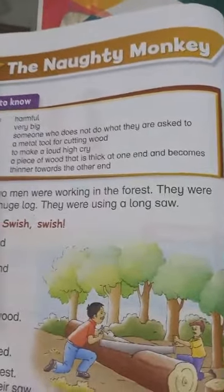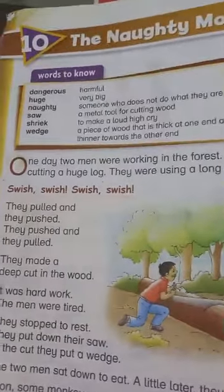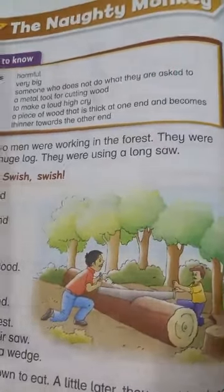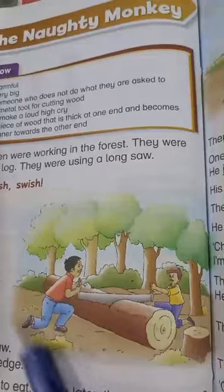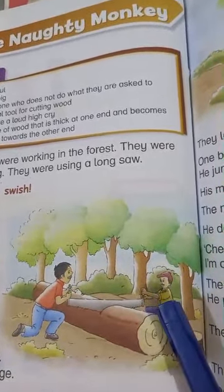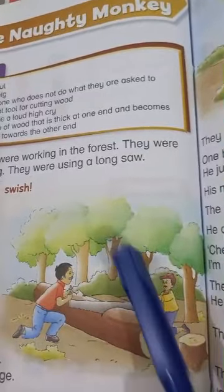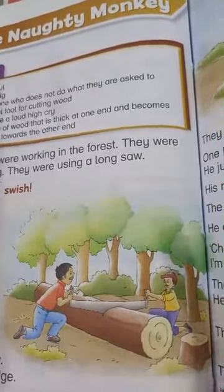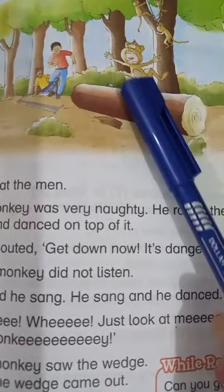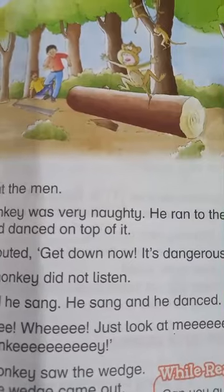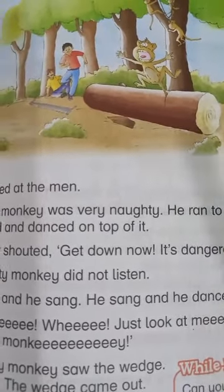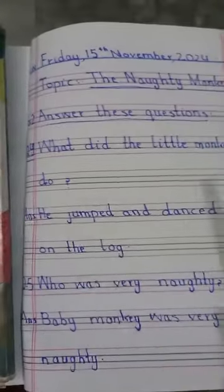Who was naughty in this story? Baby monkey is naughty in the story. What is the name of this lesson? This picture is of a forest where two men are working. Who dances and sings a song? Baby monkey dances and sings a song.